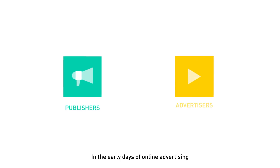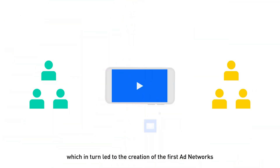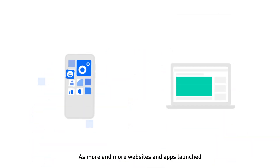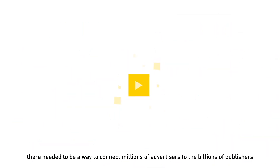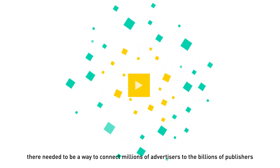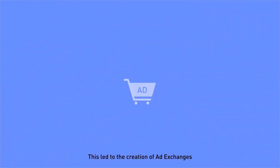In the early days of online advertising, publishers and advertisers sought ways to efficiently manage their buying and selling needs, which in turn led to the creation of the first ad networks. As more and more websites and apps launched, there needed to be a way to connect millions of advertisers to the billions of publishers with unsold inventory. This led to the creation of ad exchanges.